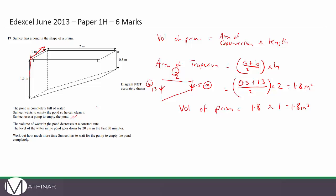The volume of water decreases at a constant rate. The level of water in the pond goes down by 20 centimeters in the first 30 minutes. Now, if we take off 20 centimeters of water — is that disappearing from the top or bottom of the tank? The water falls out the bottom due to gravity, so the top will be the empty bit. The shape of the volume removed is a cuboid.